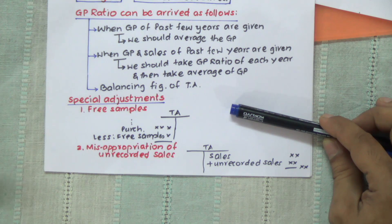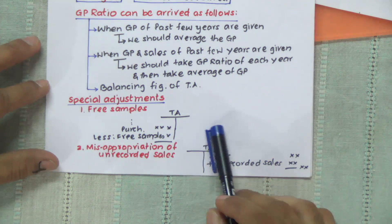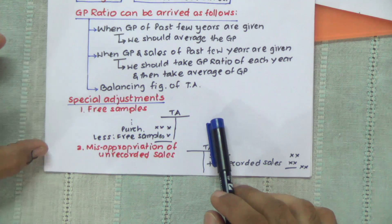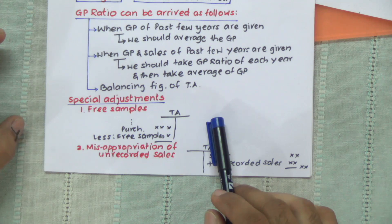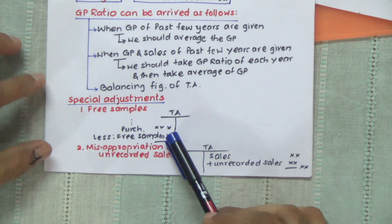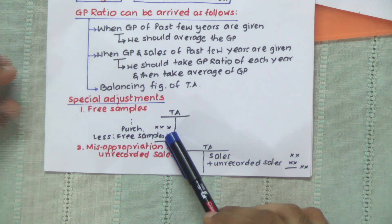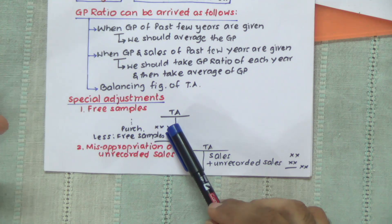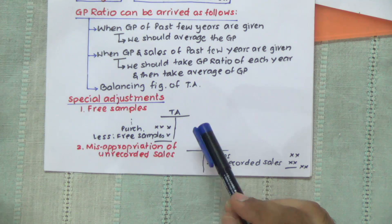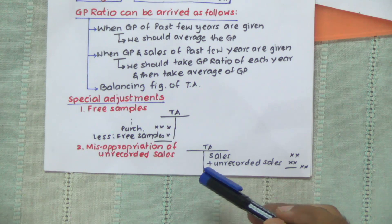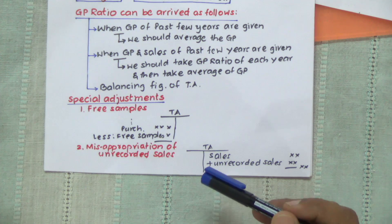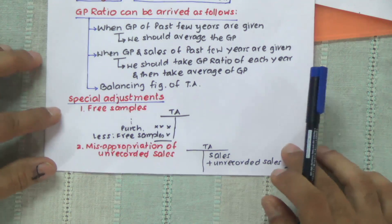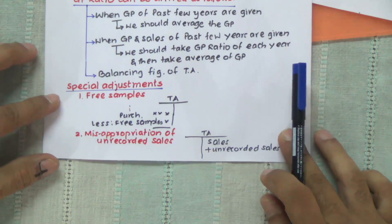If an element of profit was involved, we would have deducted from sales, which appears on the credit side of the trading account. Since free samples are given free of cost, it's a reduction in purchases. To that extent, the stock available for sale gets reduced. So purchases less free samples — that's the treatment.